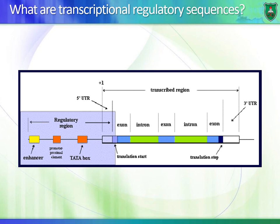What are transcriptional regulatory sequences? There are different types of sequences. We have the core promoter sequence, which includes the TATA box. It's a sequence that is upstream of the transcription start site — the region where the RNA polymerase binds in order to start transcription at the transcription start site.